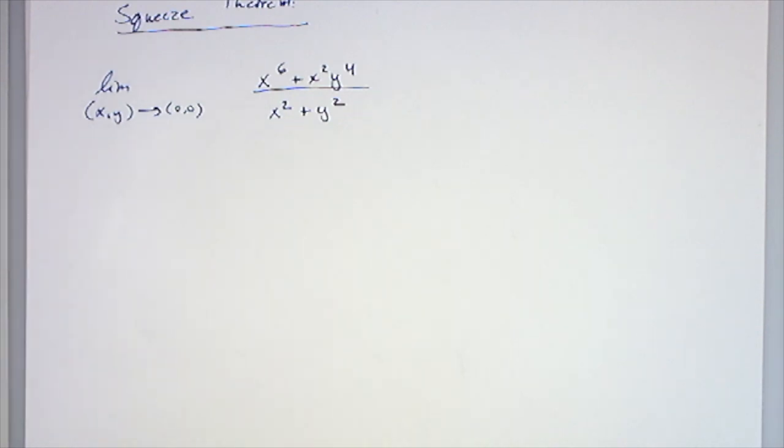So here we have the limit as x, y approaches 0, 0 of x to the 6 plus x squared y to the 4th, divided by x squared plus y squared.